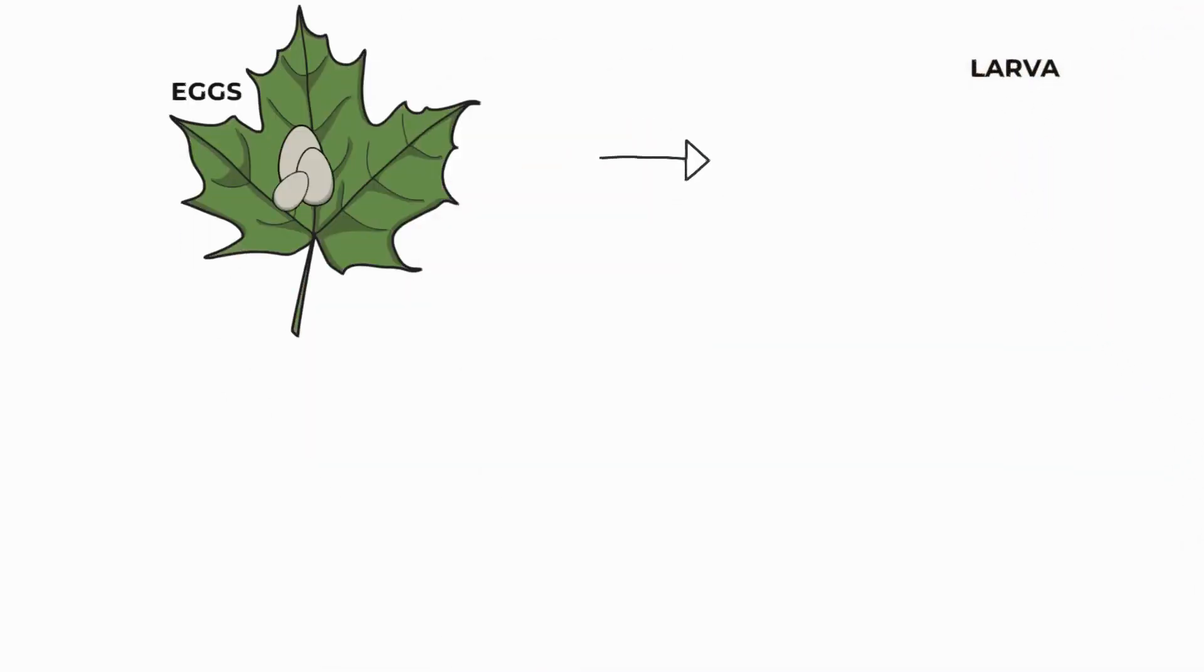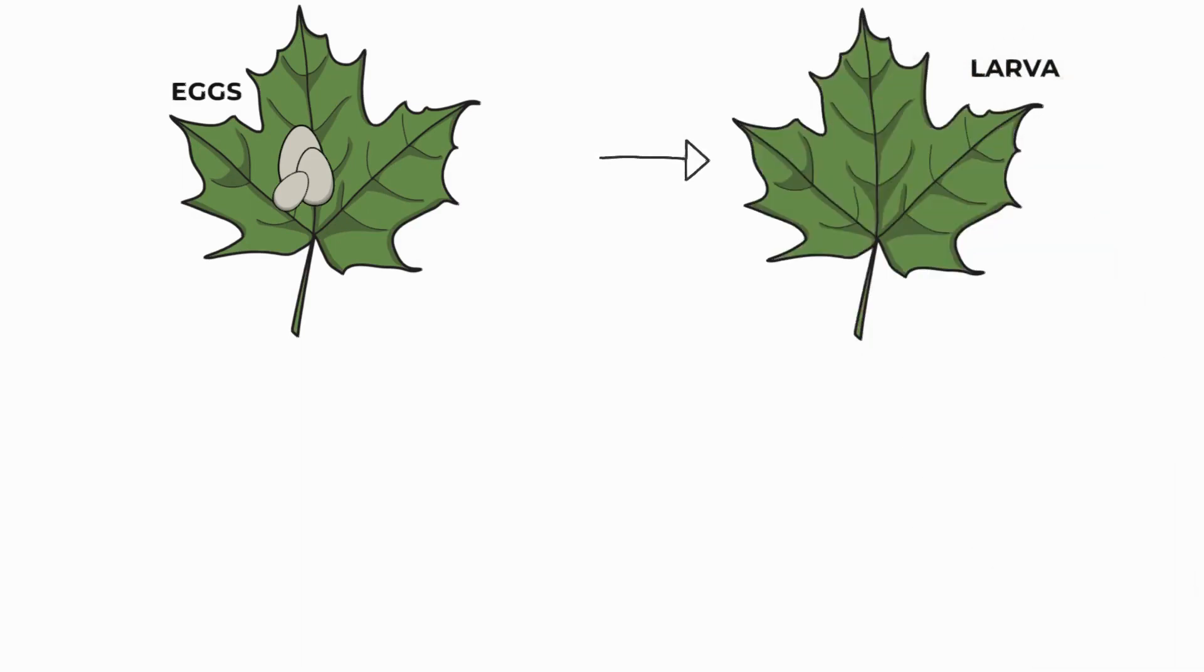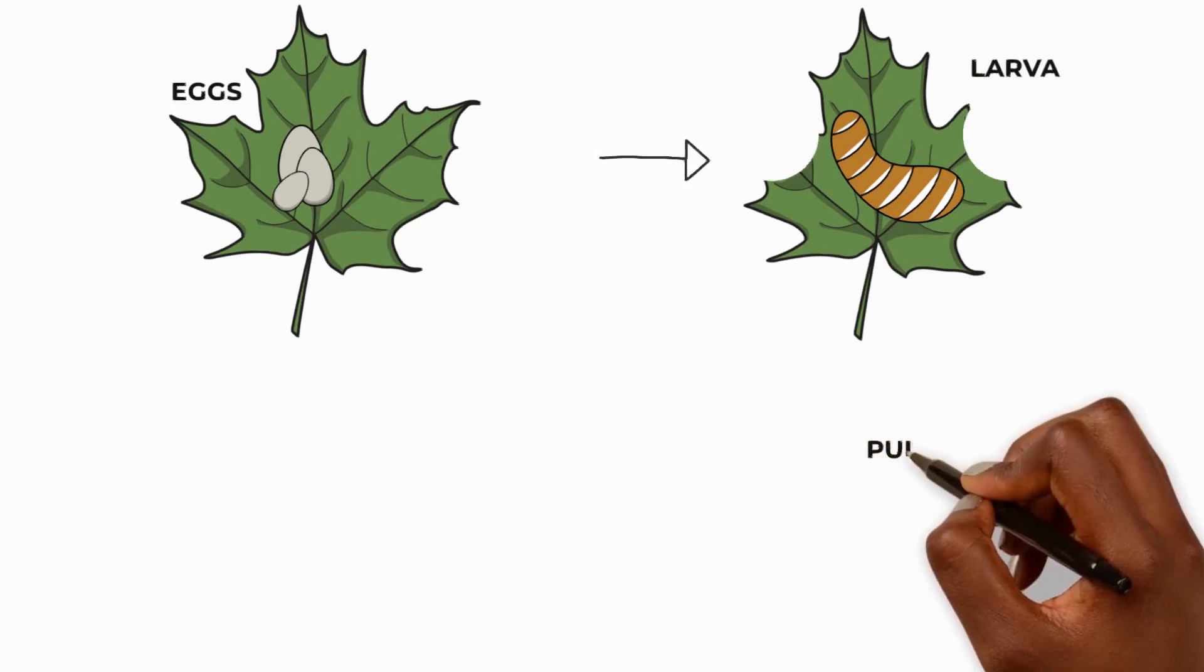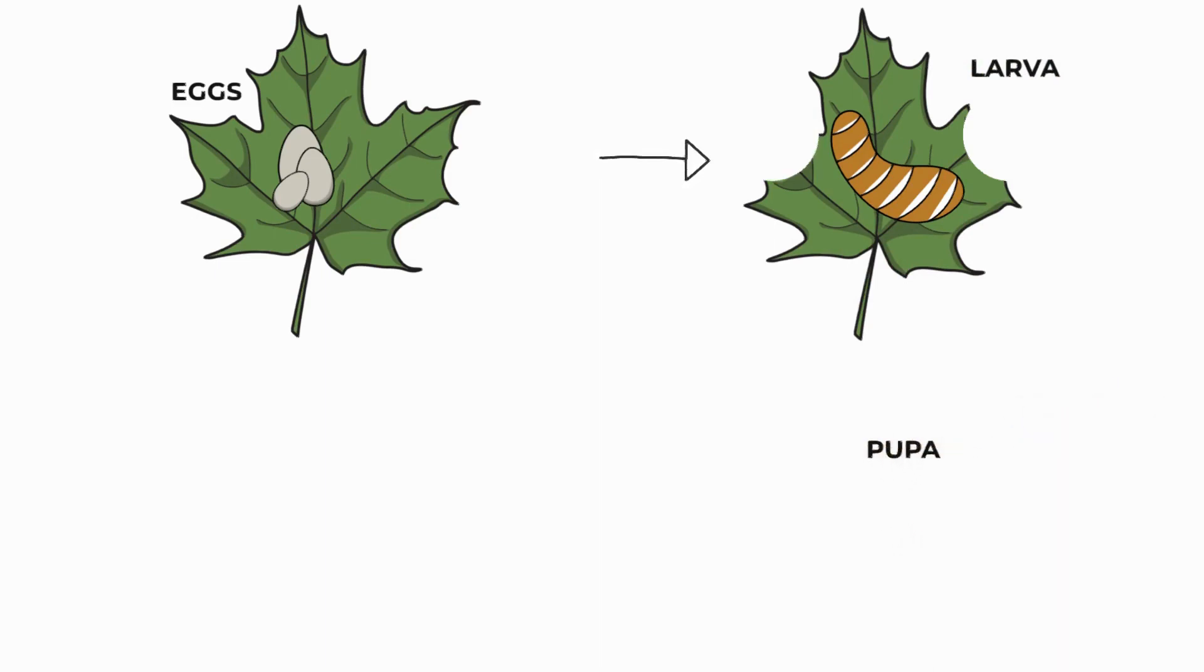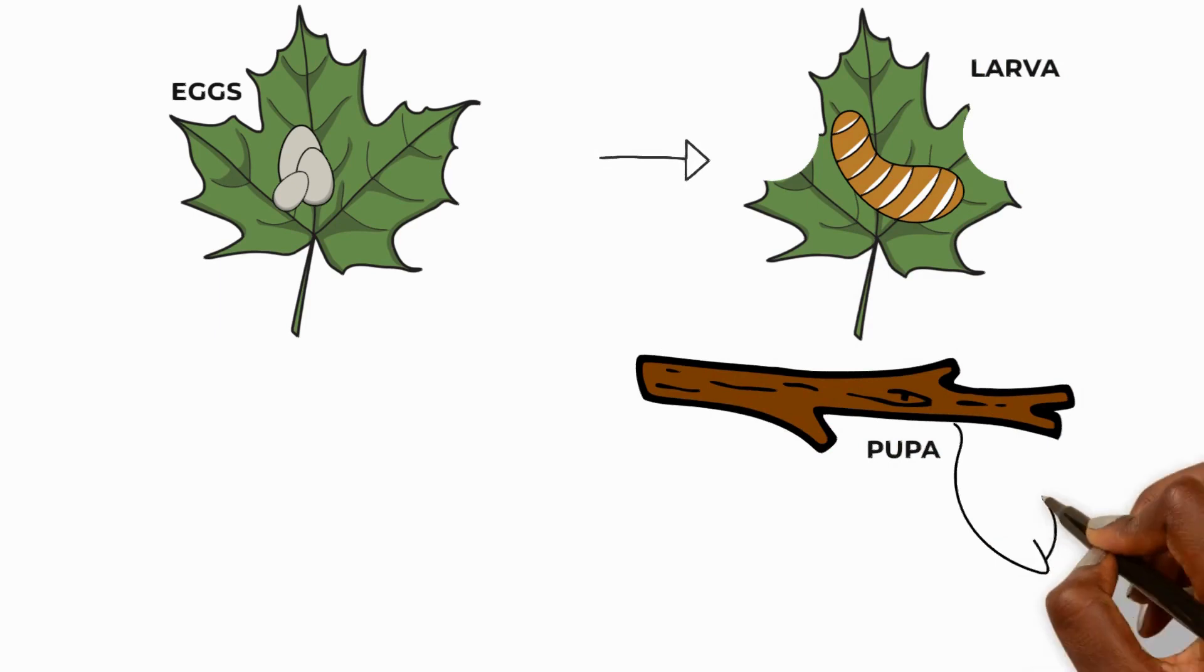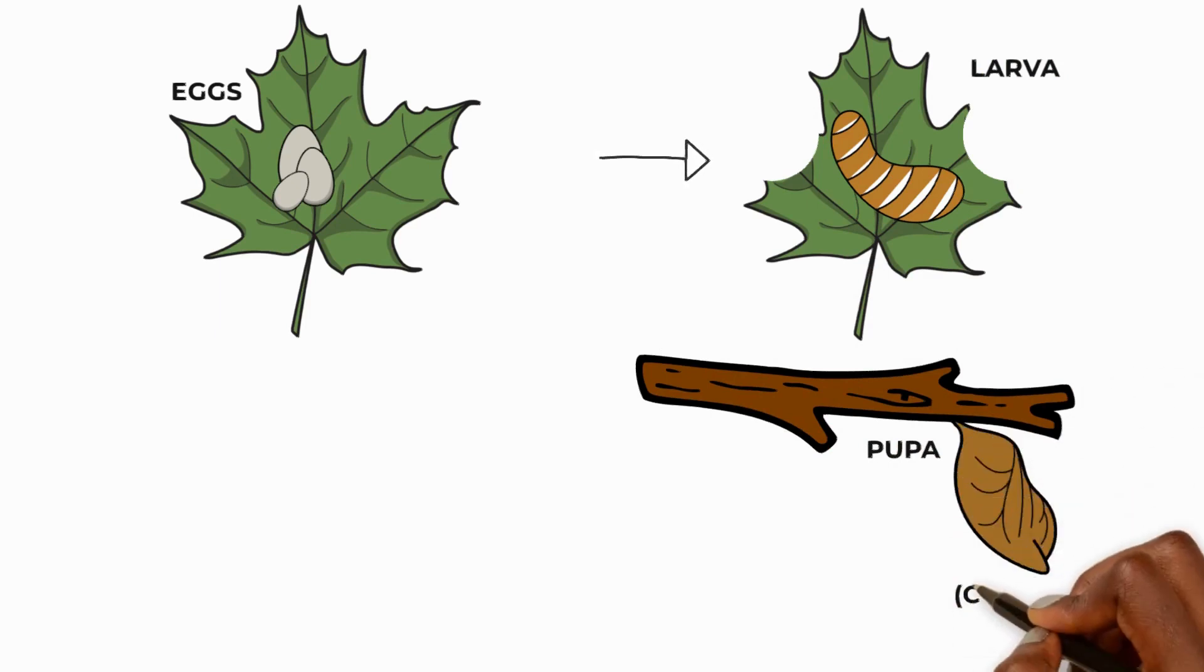The insect hatches from an egg and turns into a larva, which looks a bit like a worm. At this stage, their main job is to feed. The larva turns into a pupa and by now it's grown to adult size. This part of metamorphosis takes place inside a case called a cocoon.